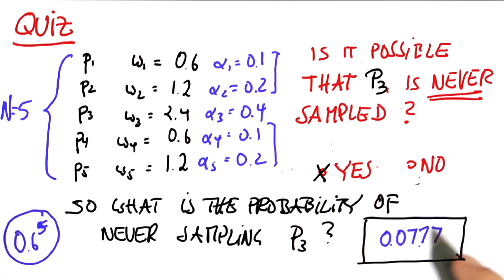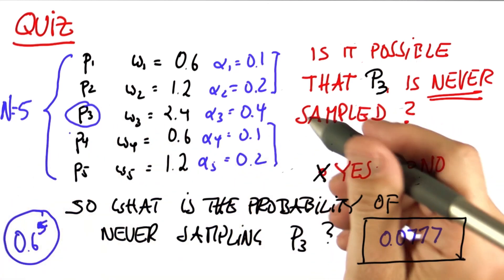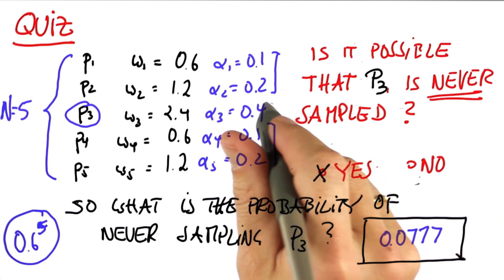Put differently, there is about a 7.7% chance that this particle over here is missing. But with almost 93% probability, we'd have this particle included.